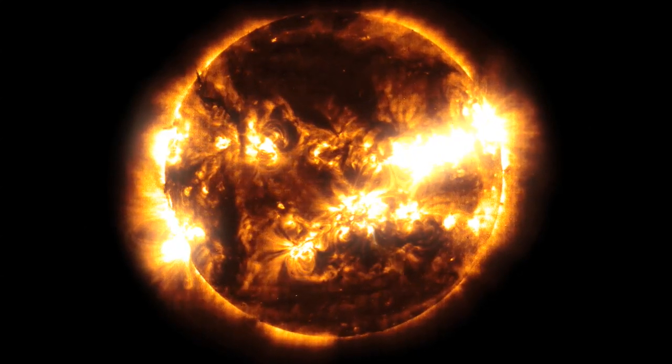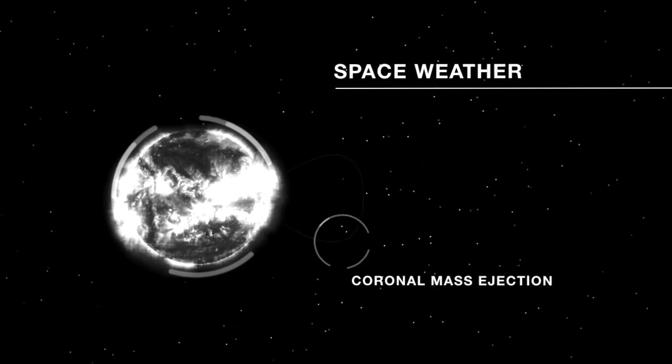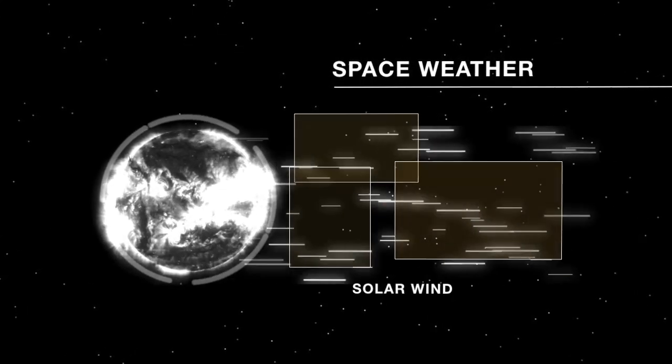The Sun is different every time we look at it. Those changes in the Sun we see here at the Earth as well. We call those effects here at the Earth space weather.